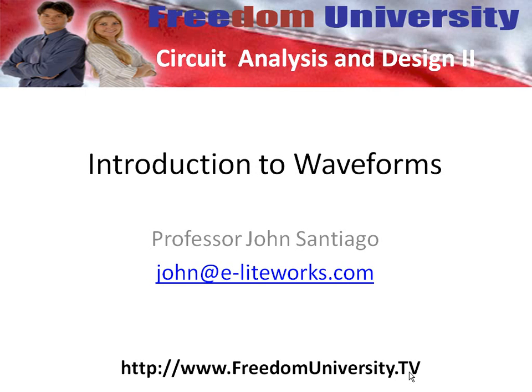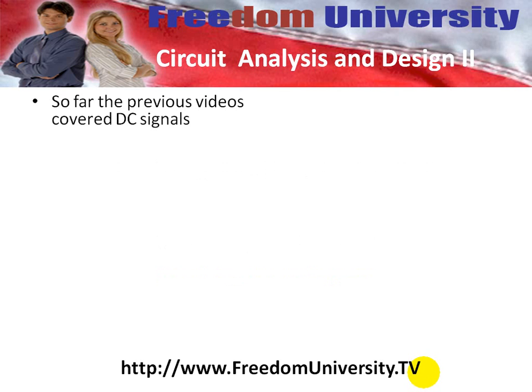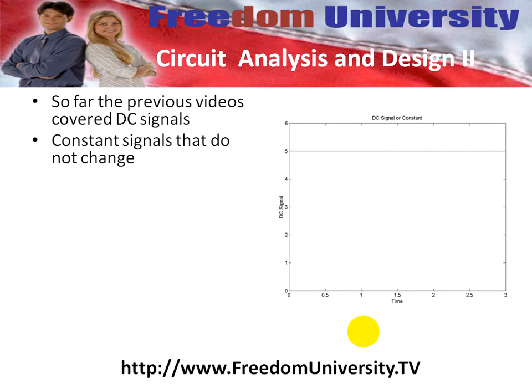This is a key ingredient if you want to understand how communication systems work. The previous videos discussed DC signals that do not change. The figure shown here has the time axis on the horizontal and the vertical is the amplitude. The amplitude doesn't change with time — we call this a DC signal, or a constant signal.